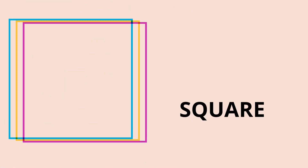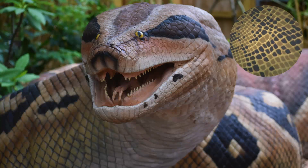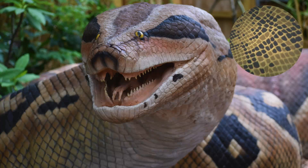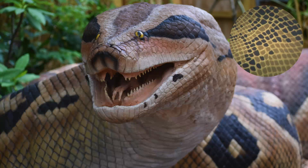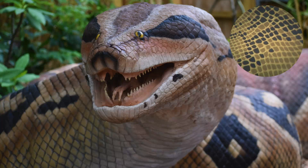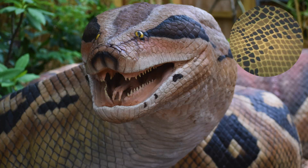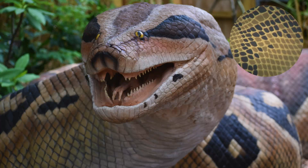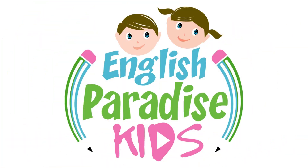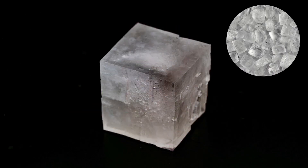Next, let's look at the square. While squares might seem less common in nature, you'll be surprised by these examples. Scales of a snake: some snakes have square-like patterns on their scales. Salt crystals form perfect cubes, showcasing nature's geometric precision.